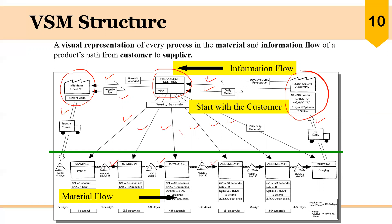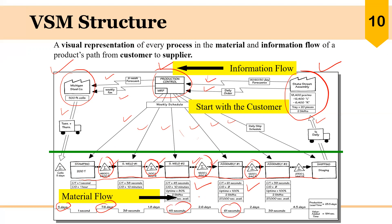There are icons for inventory between processes. The flow is shown from left to right. Inventory is shown between processes along with a push symbol. Each process has a data box showing cycle time, changeover time, etc. Finally, there is a timeline that shows waiting time at the top and value-added time at the bottom.